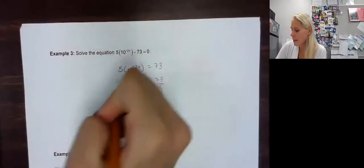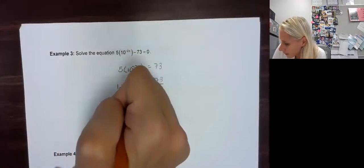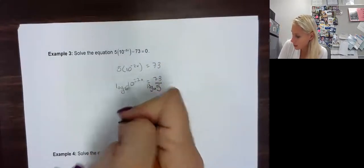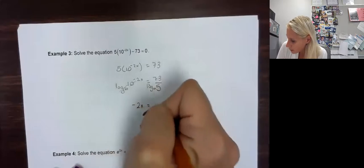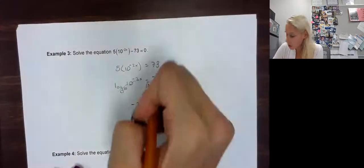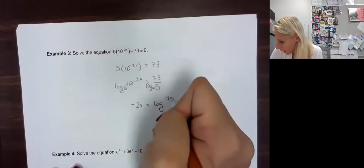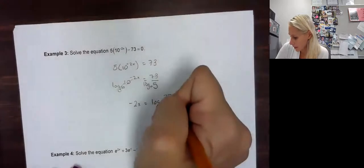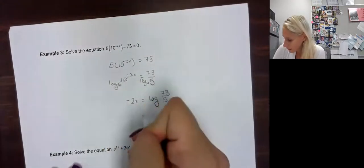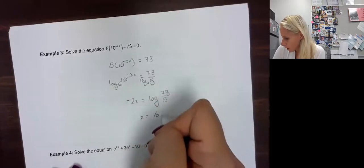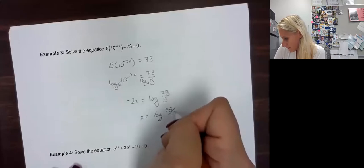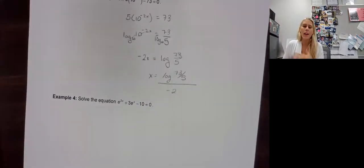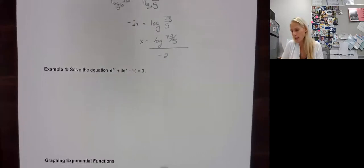And what did I say at the beginning of this lesson? We're either going to get the bases to be the same so we can look at the exponent, or we're going to have to use our inverses. Well, if we have a base 10 here, that means we have to do log base 10 to get rid of it. And whatever we do to one side, we do to the other. And those cancel. So I get negative 2x equals log 73 over 5. Now I'm going to do the exact value, so I'm not even going to put that in my calculator right now. And then how do you get x by itself? We divide by negative 2. So I have log of 73 fifths all over negative 2, and then done.